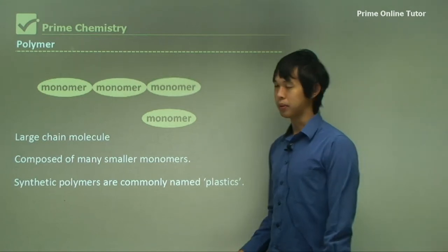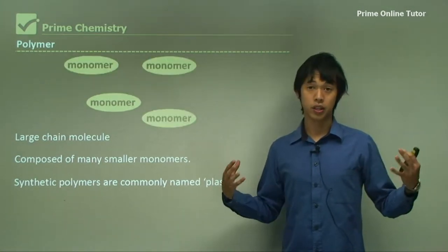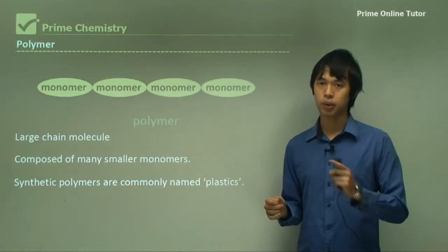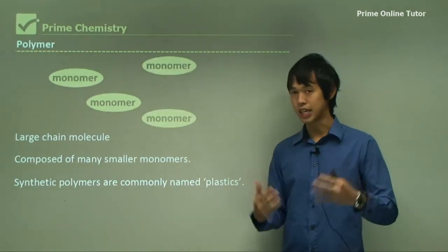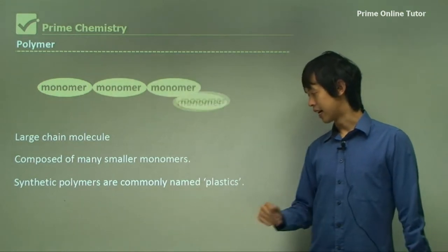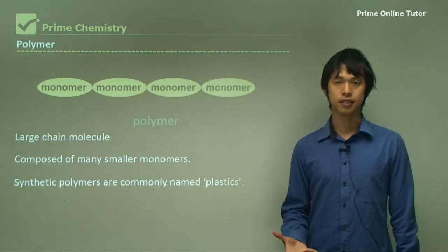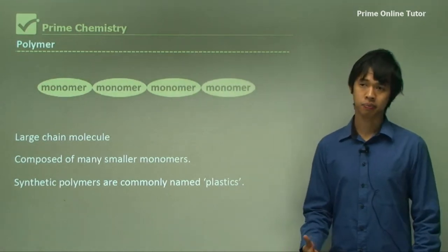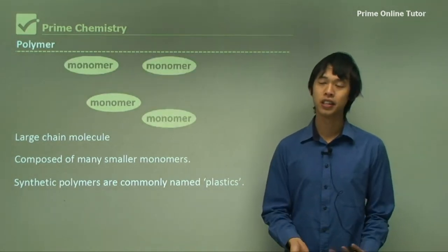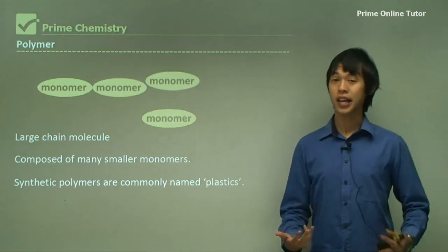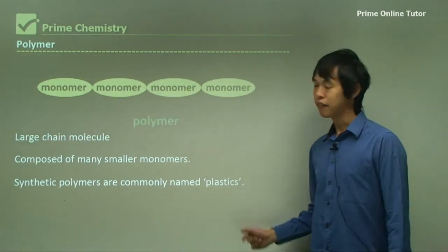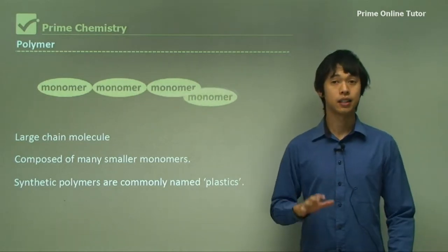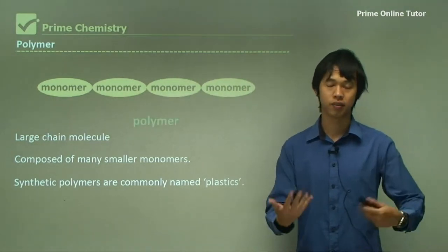Synthetic polymers — the ones we create rather than find in nature — are sometimes called plastics. They don't necessarily all have to be plastics; for instance, Teflon I wouldn't quite classify as a plastic. But for the most part, most synthetic polymers we see are some form of plastic we're familiar with.